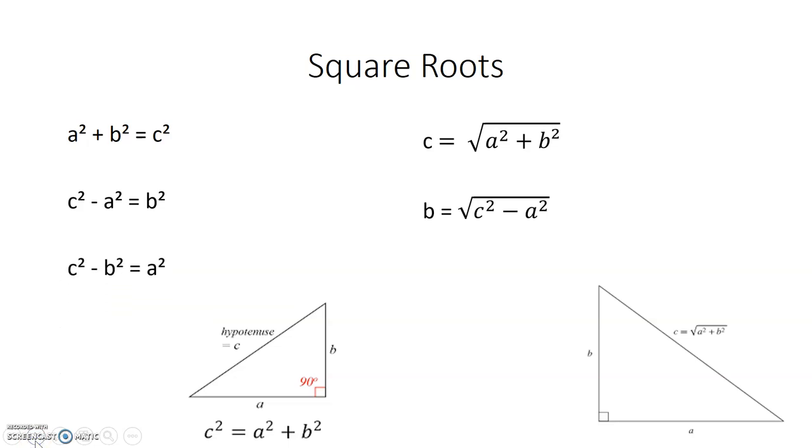Also, we want to find the A. We can then again isolate the A. A equals the square root of C squared minus B squared.